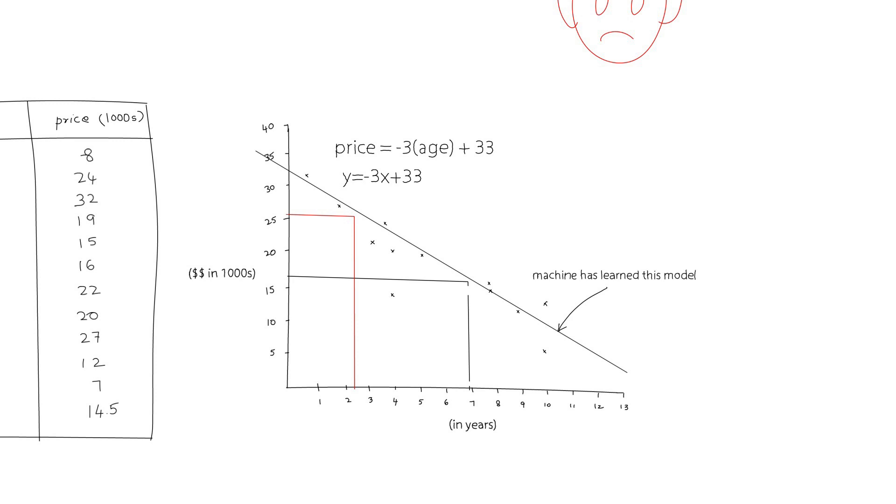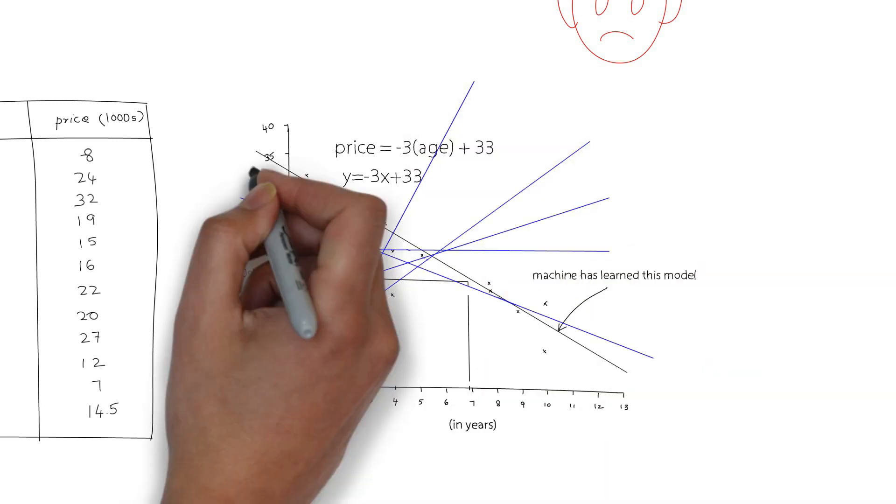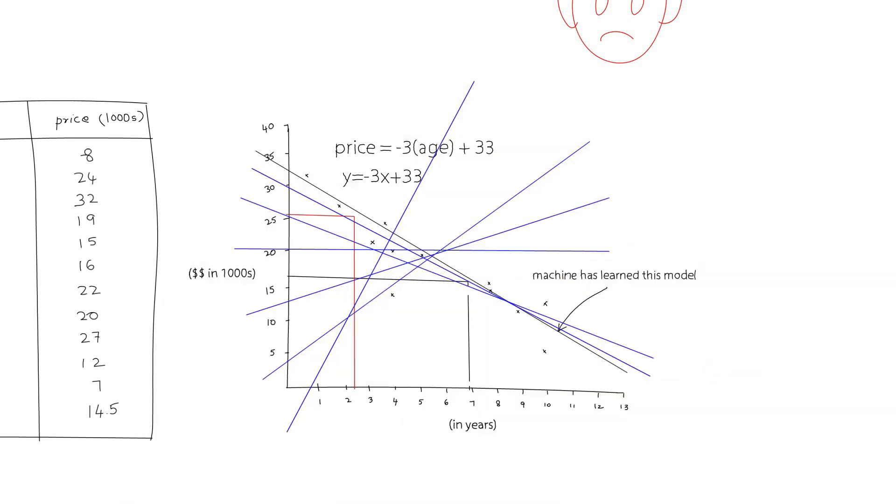which basically tells it how far it is from the data points. If the error is too high, then it adjusts the two parameters, the slope and the y-intercept, in a way that reduces this error. Then, it does it again and again until it comes to a close approximation of the data.